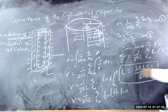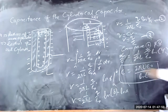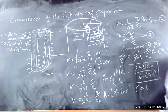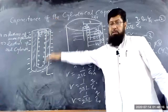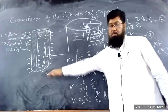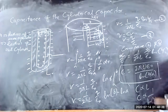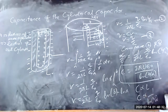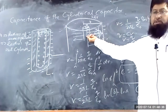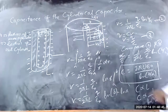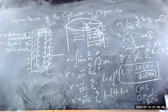The cylindrical capacitance is directly proportional to the length L and inversely proportional to the logarithm of the ratio of the radii B/A. The constants 2π and ε₀ are fixed. So C varies with the length and with the ratio of the radii of the cylinders.